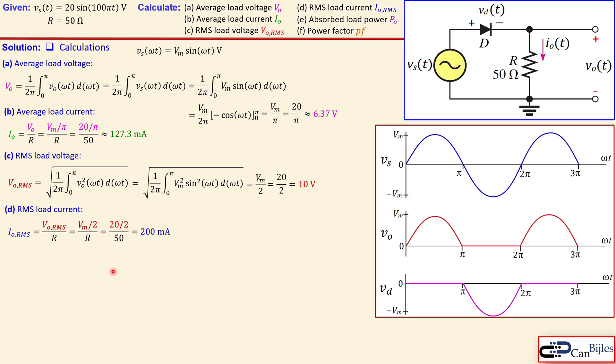Absorbed power can be calculated in two ways: you can take the Vo_rms squared over R, or Io_rms squared times R. The result will be the same. In this case, 10 squared over 50 will be 2 watts exactly.